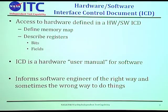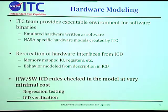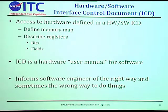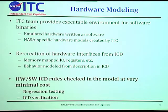The ICD informs a software engineer of the right way — and sometimes the wrong way — to do things. In terms of the wrong way, the ICD might say if you want to do these three things, do them, but not until something else is done first. That's an important thing to remember for the case study coming up.